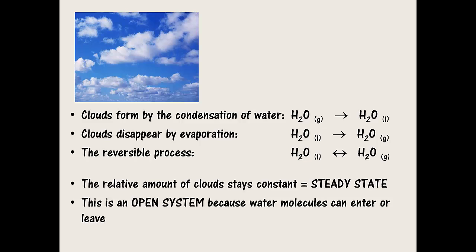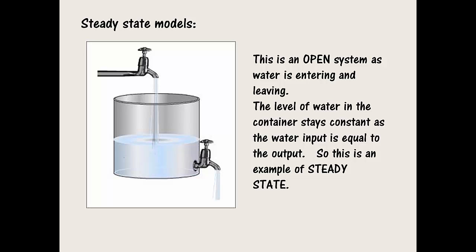In this example, the system is open. That means the water molecules can leave by raining or enter by more evaporation from the ocean. And if one of these processes go faster than the other, eventually the clouds dry out or more clouds form and you get a cloudy day. Here is another example of a steady state. This is an open system as water is leaving through the input tap and exiting out the output tap. The level of water in the tank stays constant because the water input is equal to the water output. This is an example of a steady state.